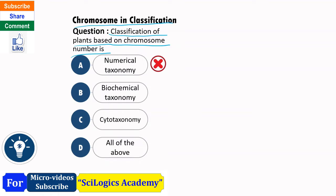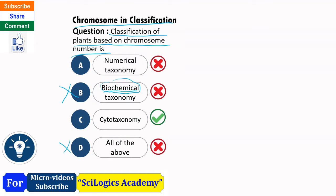Numerical taxonomy is the wrong answer. Biochemical taxonomy is also wrong because biochemistry is involved there. All of the above is wrong because the question specifically asks about chromosome-based classification, so a particular answer is required — not 'all of the above.'